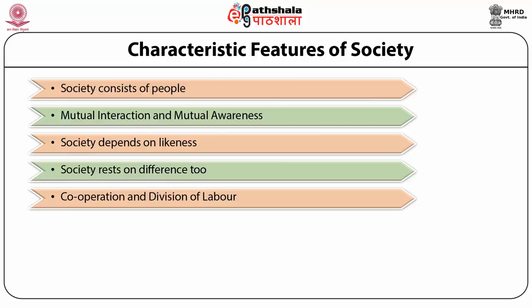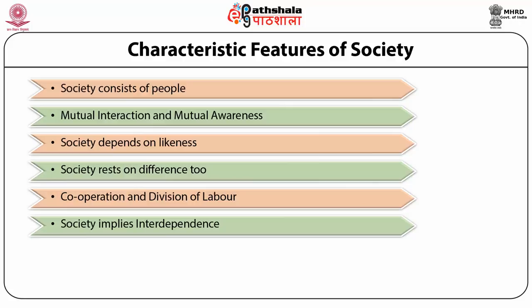The next characteristic is that society implies interdependence. Social relationships are characterised by interdependence. Family is the most basic social group, for example, and is based on interdependence of man and woman. One depends upon the other for the satisfaction of one's needs. As society advances, the area of interdependence also grows. Today, not only individuals are interdependent upon one another, but even communities, social groups, societies and nations are also interdependent.